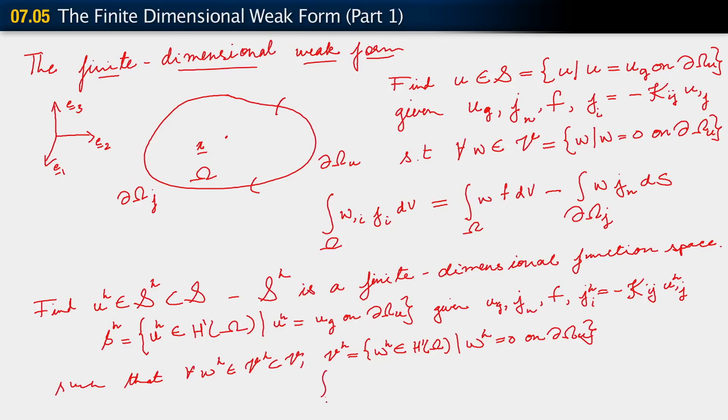We're going to find U_H in this sort of space such that for all W_H in V_H, subset of V, where V_H consists of functions W_H also in H1 over omega but satisfying the homogeneous Dirichlet boundary condition. For all such W_H, the finite dimensional version of our weak form is satisfied. And that takes on the form: integral over omega W_H,i J_H^i dV equals integral over omega W_H f dV minus integral over the flux boundary W_H j_n dS.